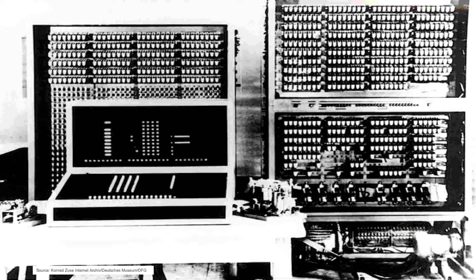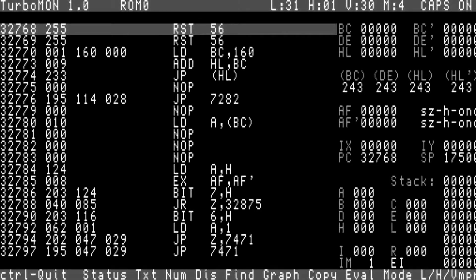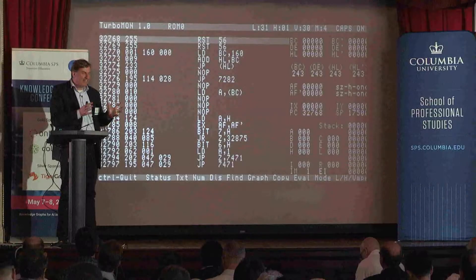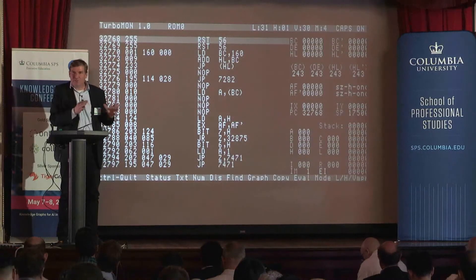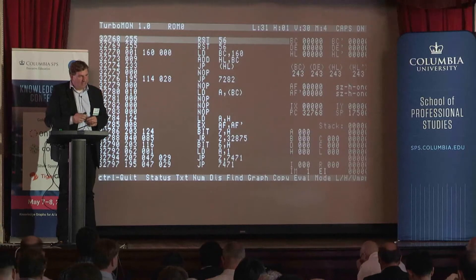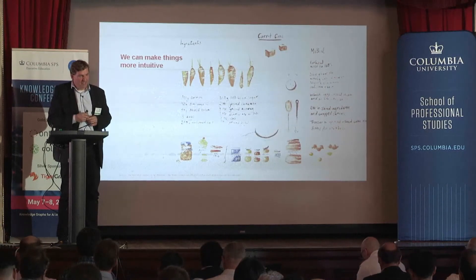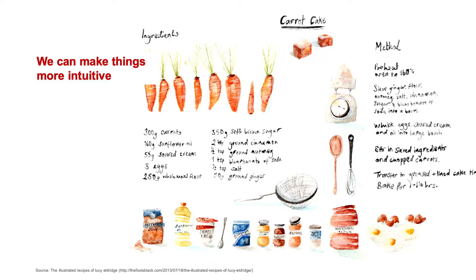In the very beginning, this is a Zuse Z3, one of the earliest computers. You had to really physically interact with the hardware. Maybe you remember the time in the 70s — there were punch cards where you also had to physically interact. Then in the 70s, it became already more intuitive. You didn't have to work with the hardware, but you still had to know what register to store what data in and so on.